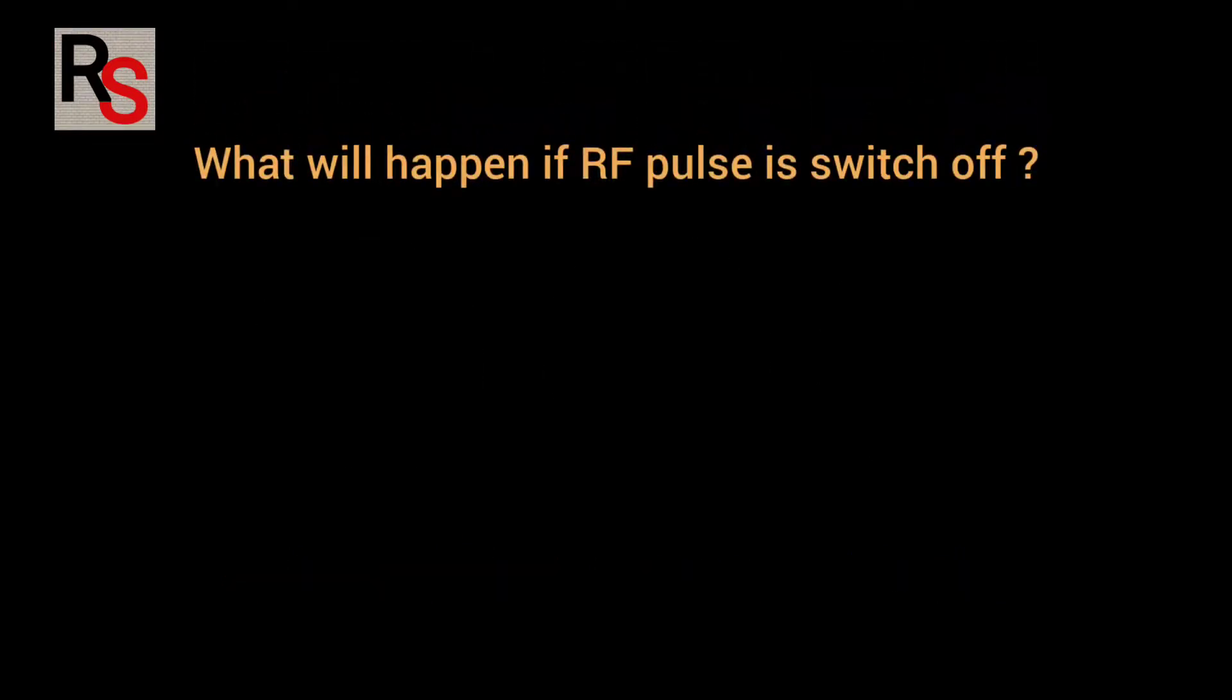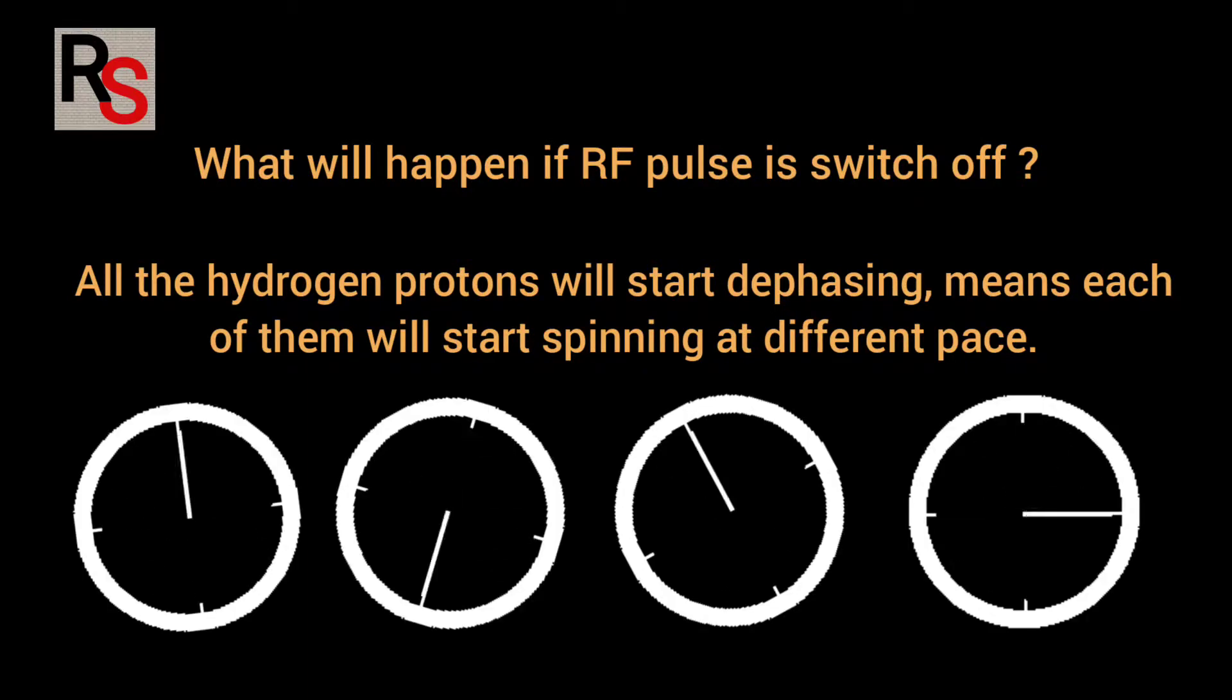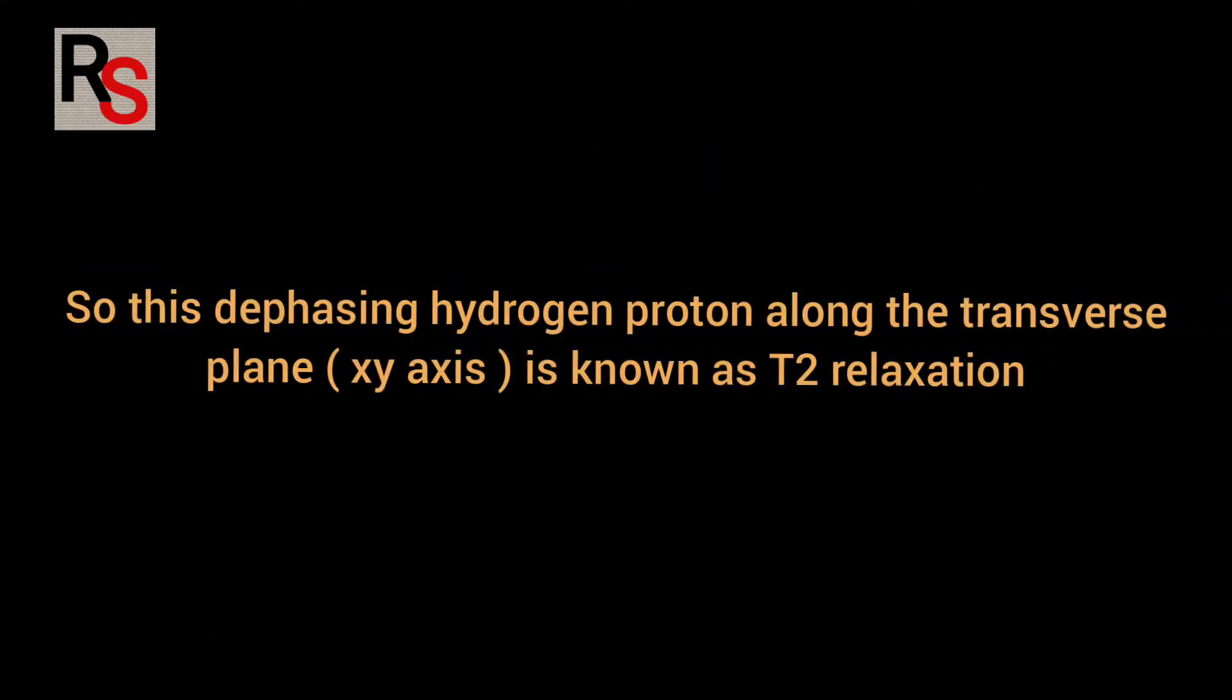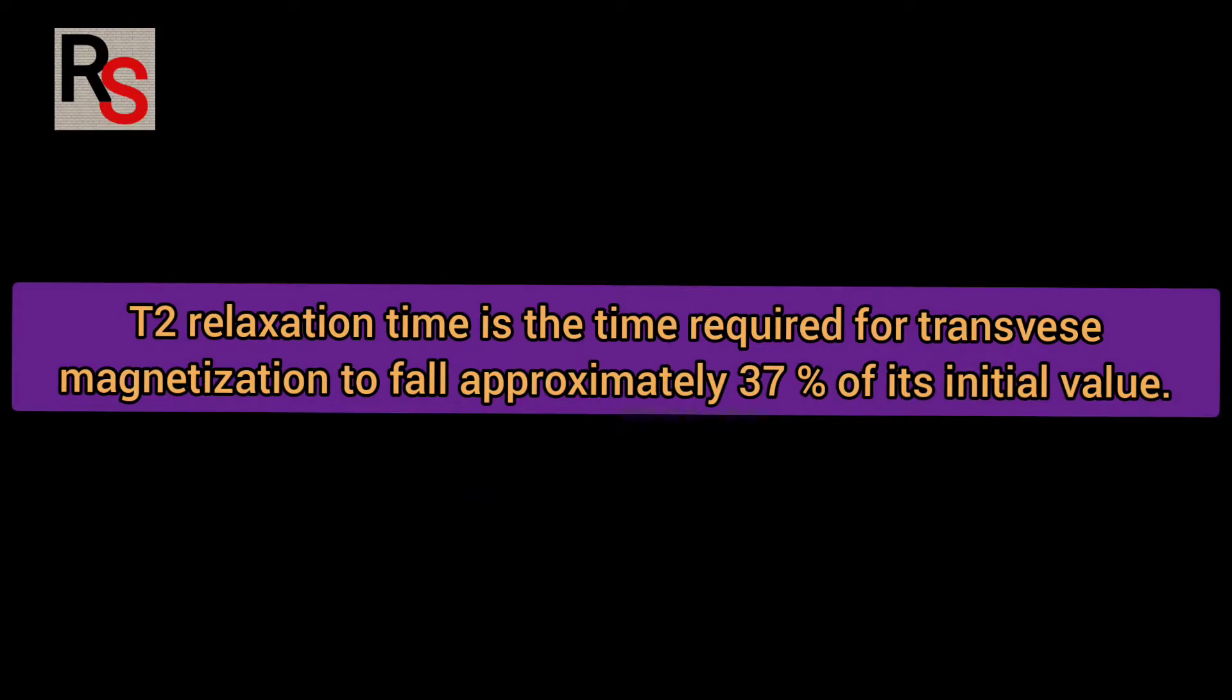But what will happen when RF pulse is switched off? Once RF pulse is switched off, all the hydrogen protons will start dephasing means each of them will start spinning at different pace. So this dephasing proton along the transverse plane is known as T2 relaxation. T2 is a time required for the transverse magnetization to fall approximately 37% of its initial value.